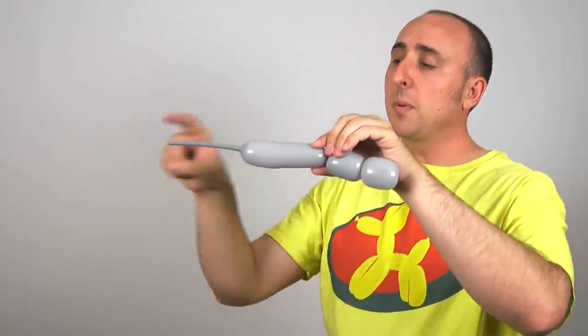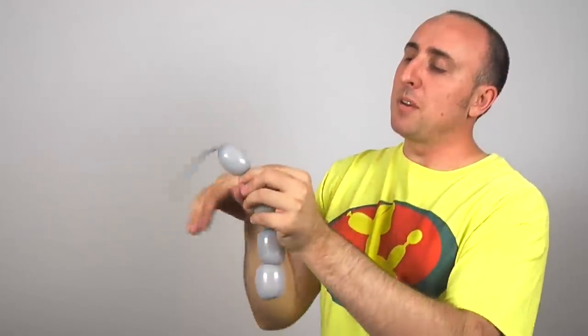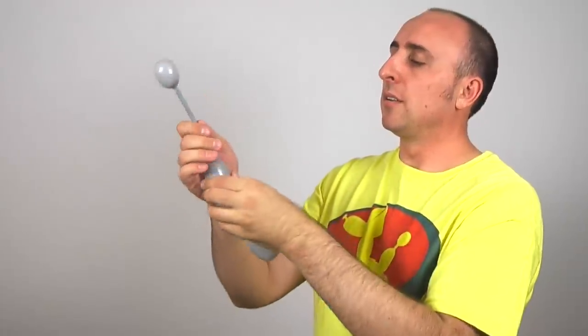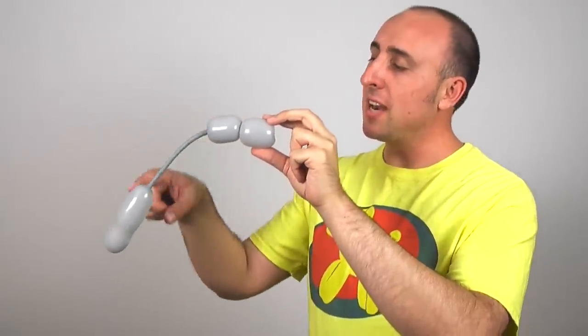Now all this air here, we want to get to the end of it. So one thing we can do, we can twist the bubble off the end, do a poodle tail, and push all the air to the end. And there we have our reel and handle. A real handle. I got a real handle on this.